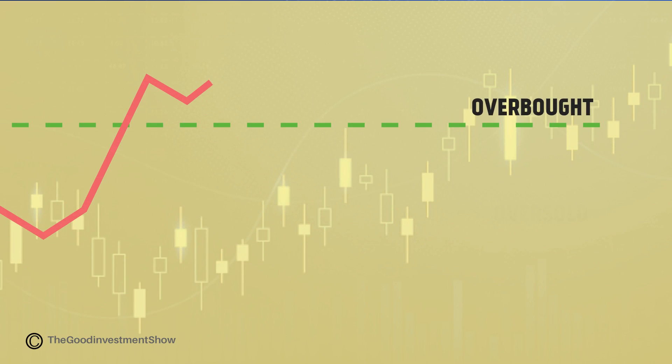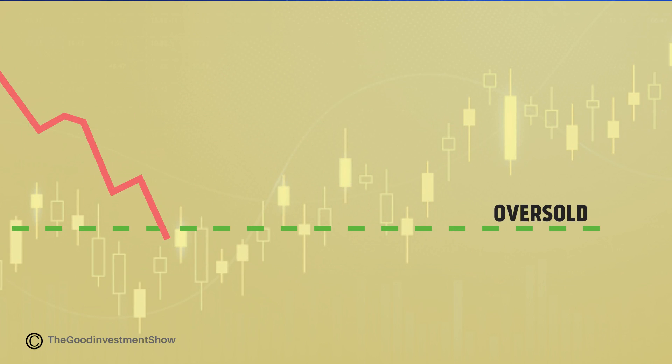Overbought refers to a stock that has increased rapidly in a short period of time and may reverse. Conversely, oversold refers to a stock that's decreased sharply in a short period of time and may reverse higher.